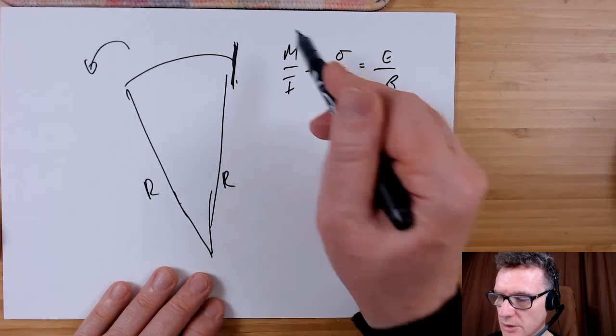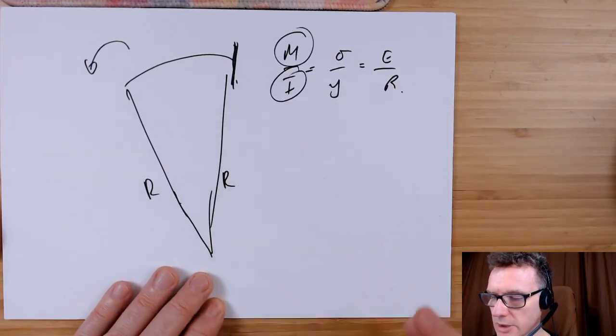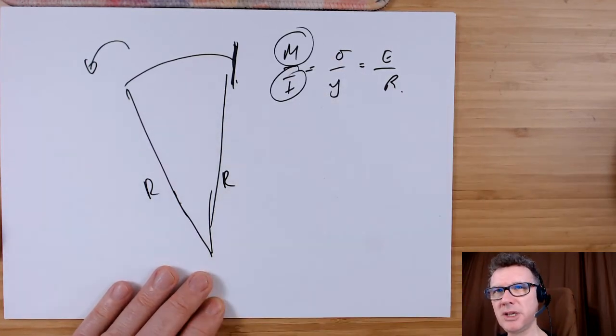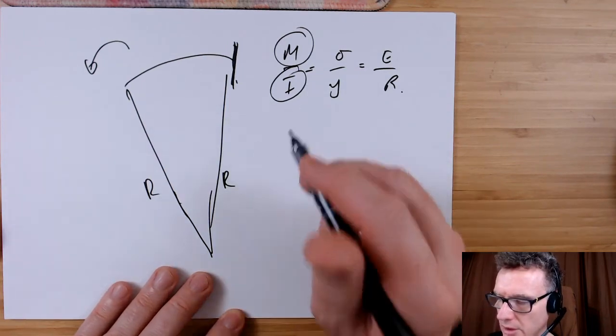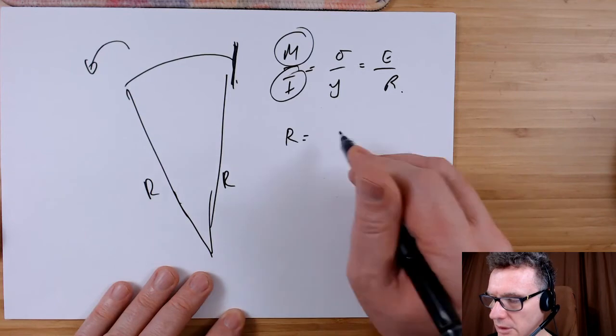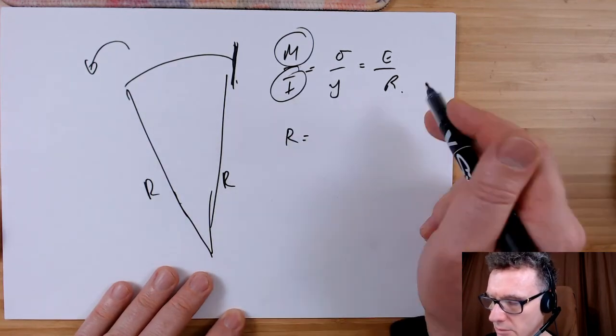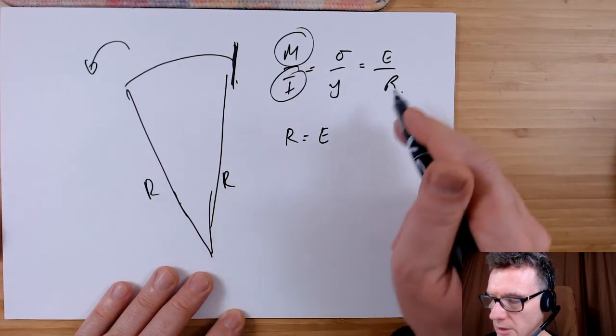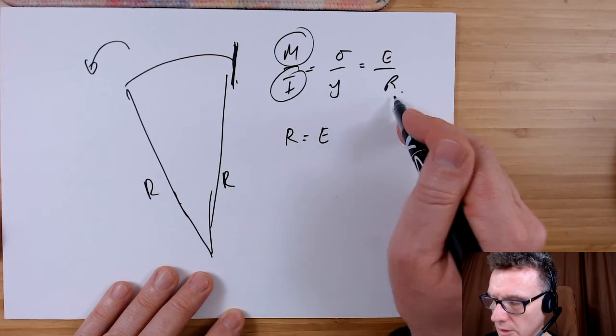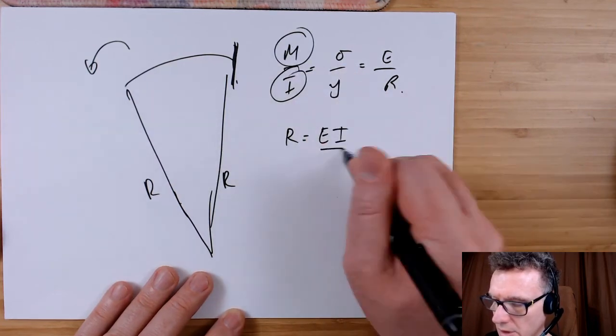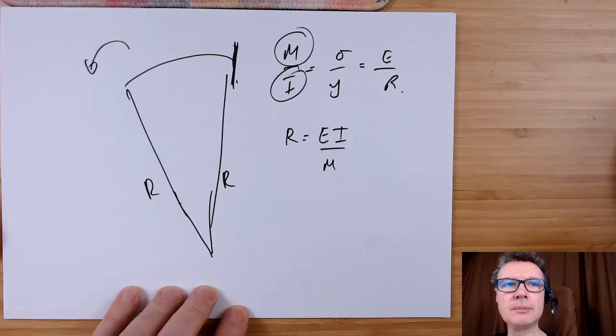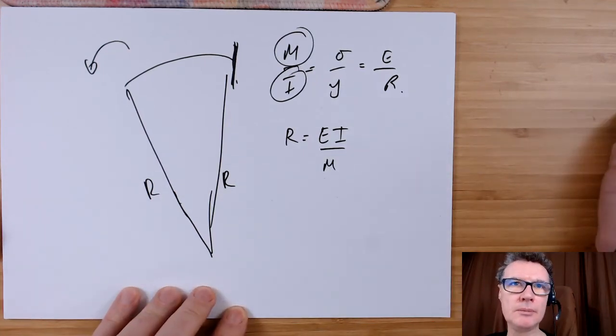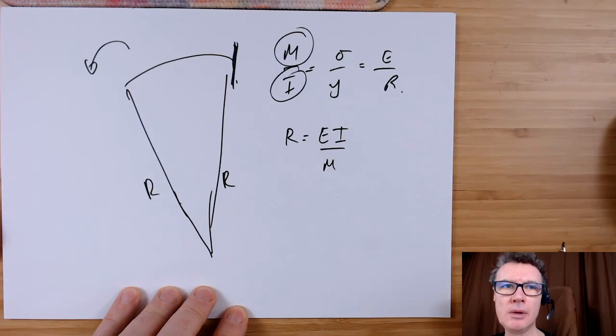And I suppose the closest thing to the raw data is going to be using the M and the I. So R equals, bring this up, E, so I'm going to bring this up this side, I over M. Okay, I think that's fine.